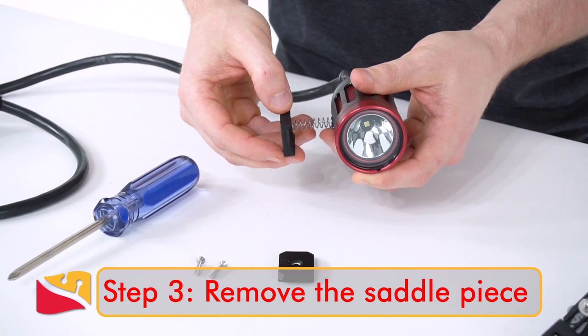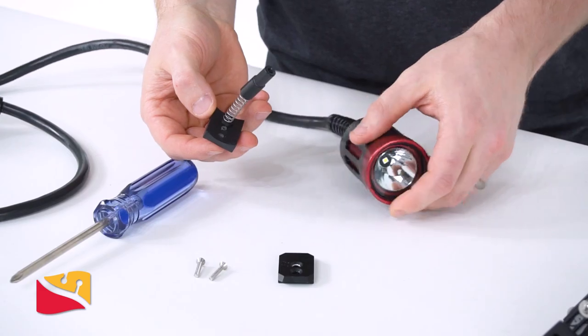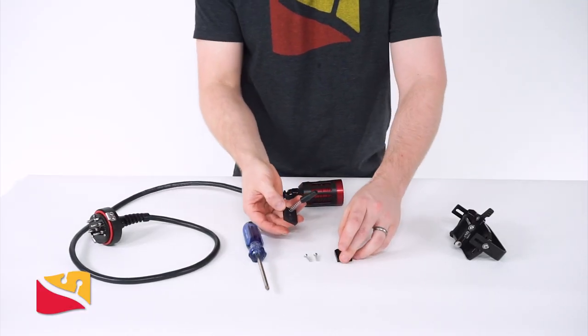Next, remove the saddle piece and the button assembly will slide right out. There are several small parts so make sure to keep track of everything.